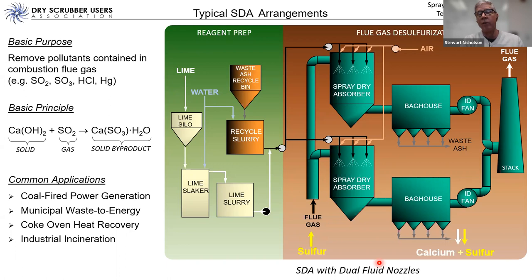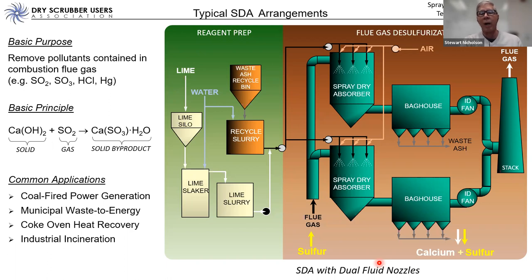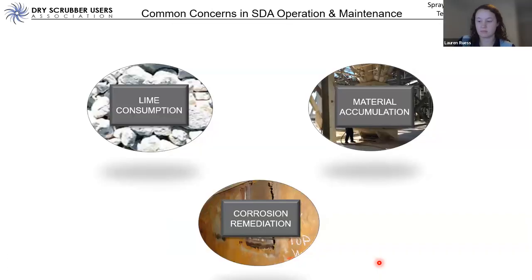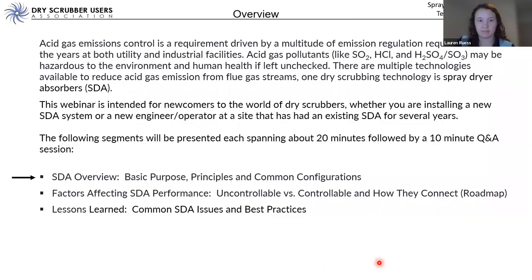Rotary atomizers and dual fluid nozzle systems are similar in terms of power consumption — rotary atomizers have large motors, but producing dual fluid nozzle spray requires compressors with large motors, so actual energy consumption of the two is very similar. In the end it may come down to preference and economic decisions made at the time of purchase. Got it, thank you.